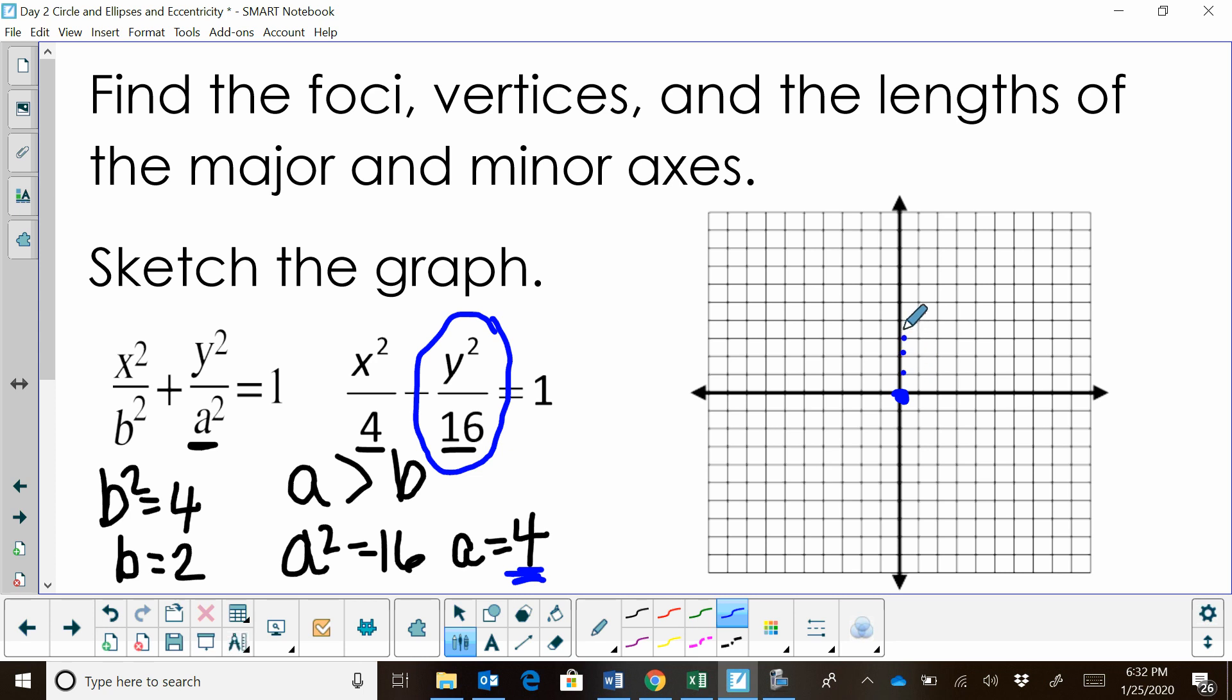I'm going to go 1, 2, 3, 4, count up a, count down a, 1, 2, 3, 4. So my vertices are at 0, plus and minus 4.